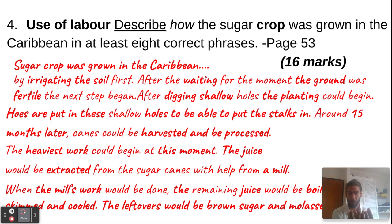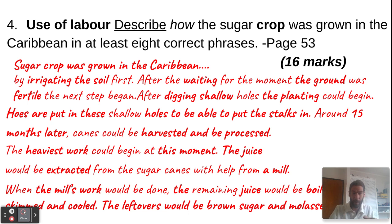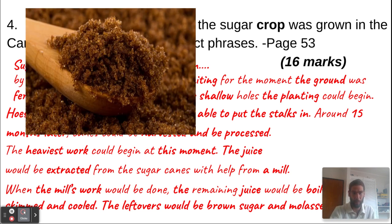The mill would grind the sugar canes, and when the mill's work was done, the remaining juice would be boiled, skimmed, and cooled down. What would be left — the leftovers — would be brown sugar and molasses. The brown sugar would be the sweetener for people in Europe.